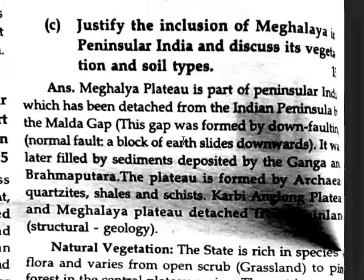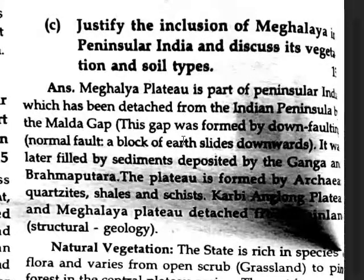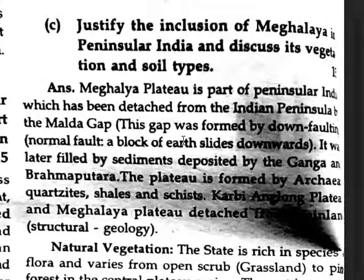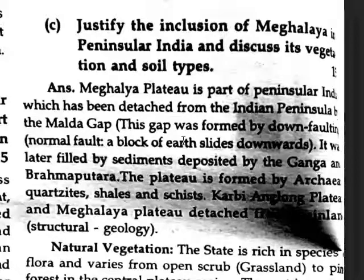Meghalaya is a part of Peninsular India which has been detached from the Indian Peninsula by the Malda Gap. This gap was formed by downfaulting, where a normal fault causes a block of earth to slide downwards.